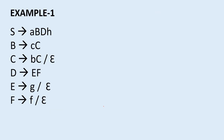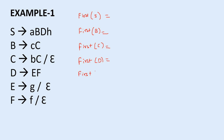Now let us take an example. S → a b d h; B → c c; C → b c and ε; E → g and ε; F → f and ε. We need to find: first of S, first of B, first of C, first of D, first of E, and first of F. First, check whether this grammar has left recursion — it does not, so we can proceed to find the first sets.